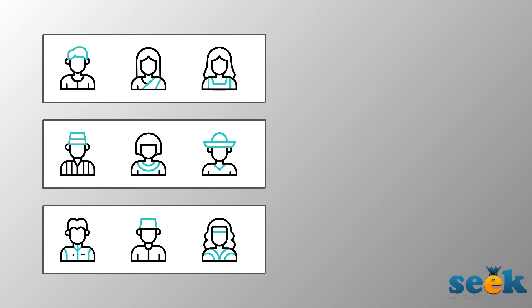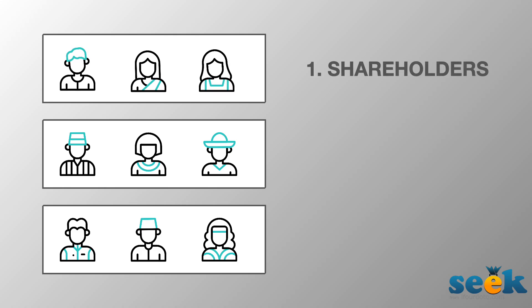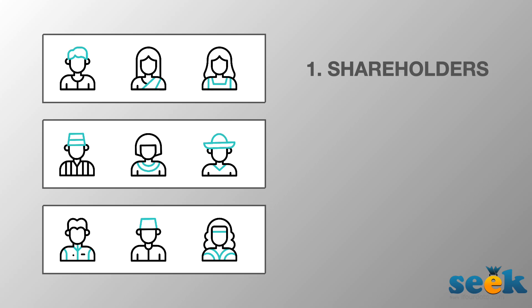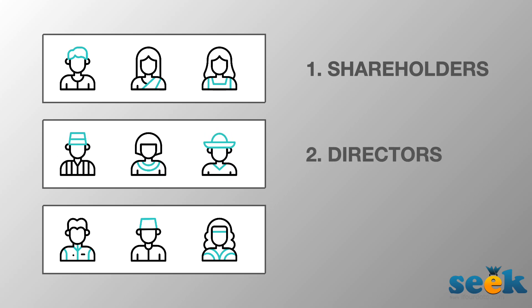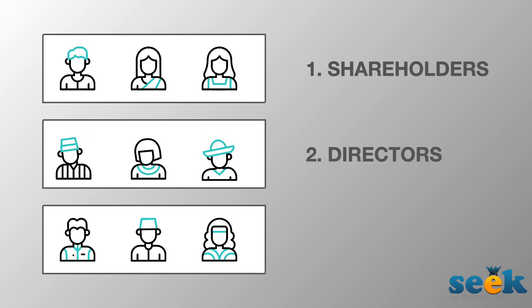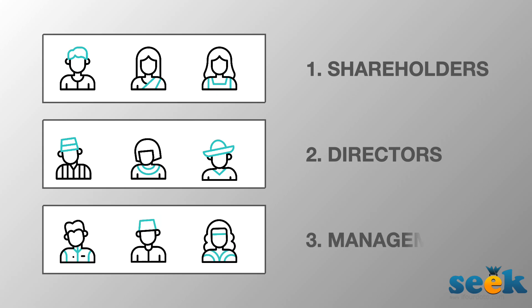Corporate Governance is primarily a relationship management process between three main stakeholders: shareholders, the board of directors, and top management.